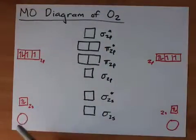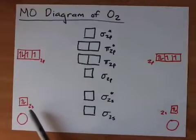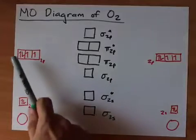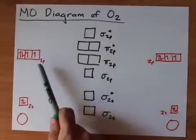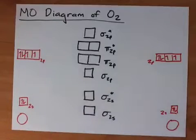Oxygen has six electrons in its valence shell. That's two electrons in its 2s atomic orbital and four electrons dispersed amongst its three 2p atomic orbitals.